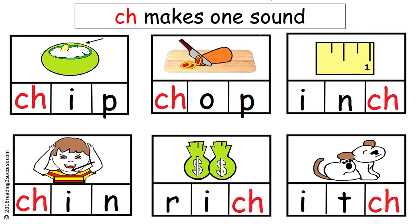So let's go back to CH. C and H make one sound, CH, and some words begin with the CH sound and some words end in the CH sound. Words that begin with CH are chip, chin, and chop. Words that end in CH are rich, inch, and itch.